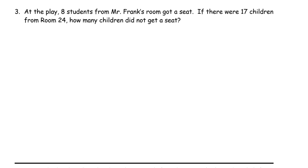At the play, 8 students from Mr. Frank's room got a seat. If there were 17 children from room 24, how many children did not get a seat? So, let's draw the 8, at the play, 8 students from Mr. Frank's room got a seat. So let's draw 8 students. 1, 2, 3, 4, 5, 6, 7, 8.